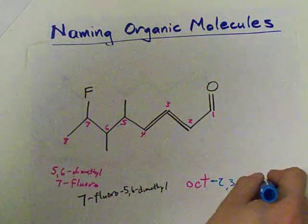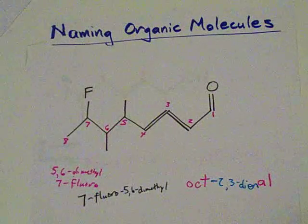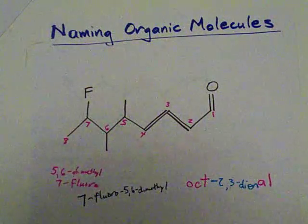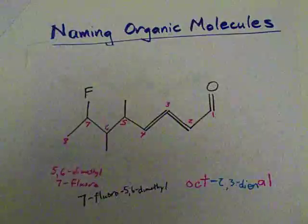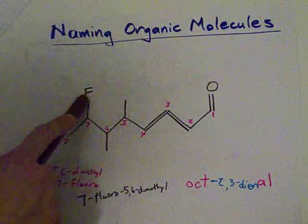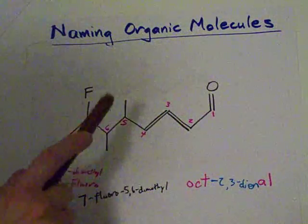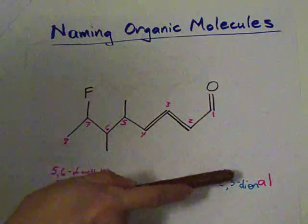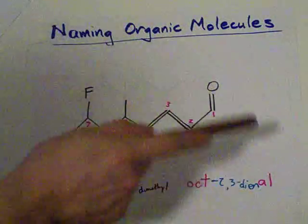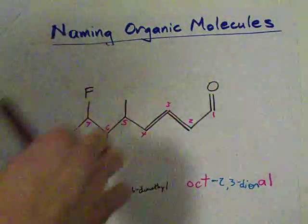And again, there's no number to indicate where the aldehyde is because it has to be at the end. The official IUPAC name for this is 7-fluoro-5,6-dimethyl-oct-2,3-diene-al. Because it's an aldehyde. Bam! Who's a genius? You are.